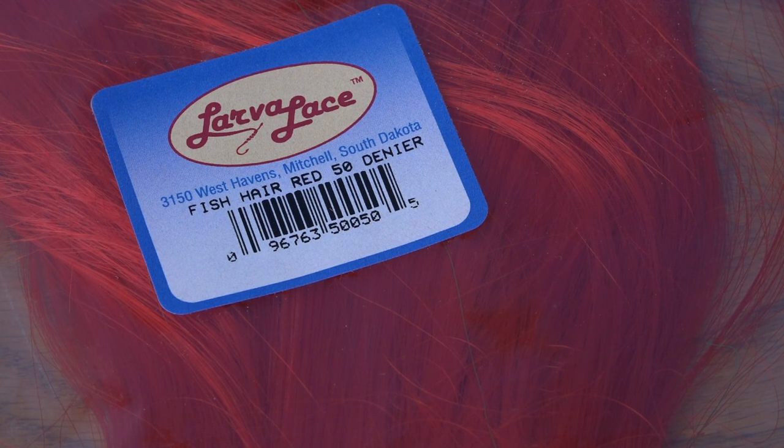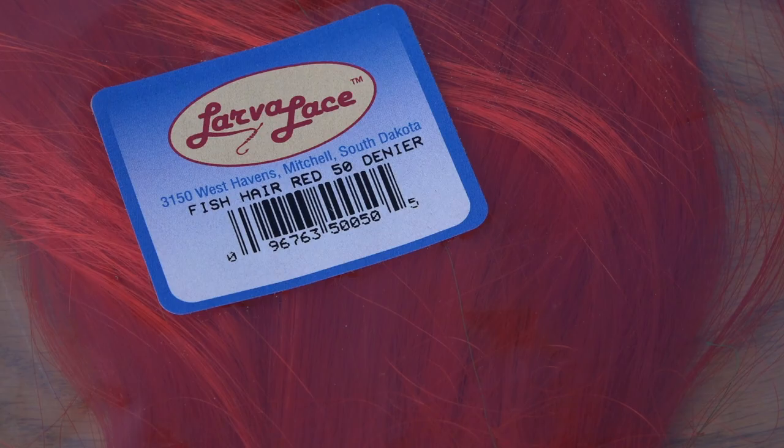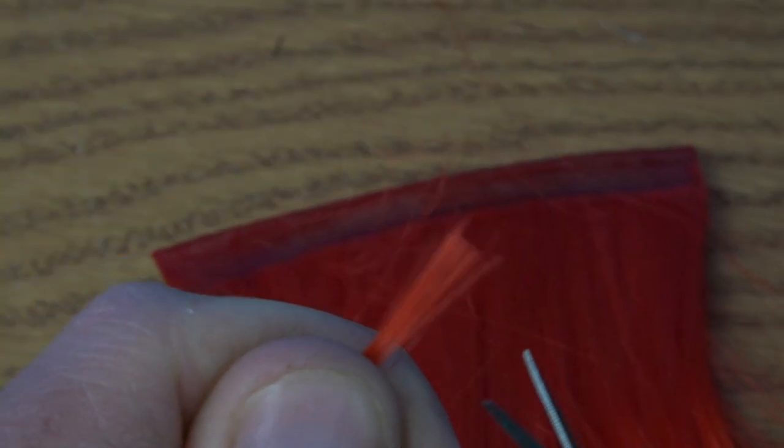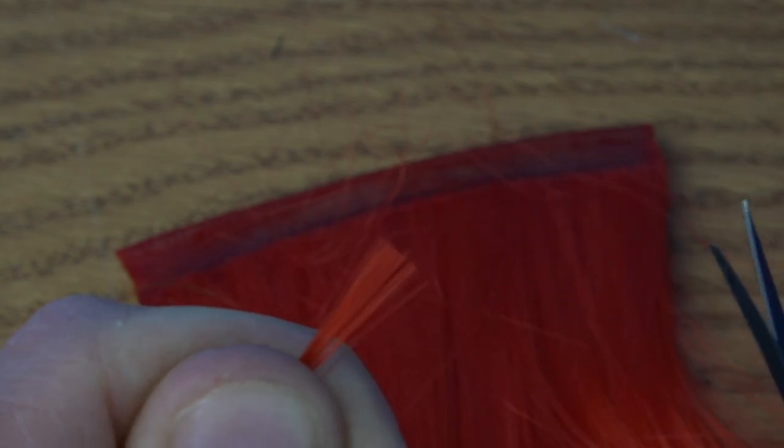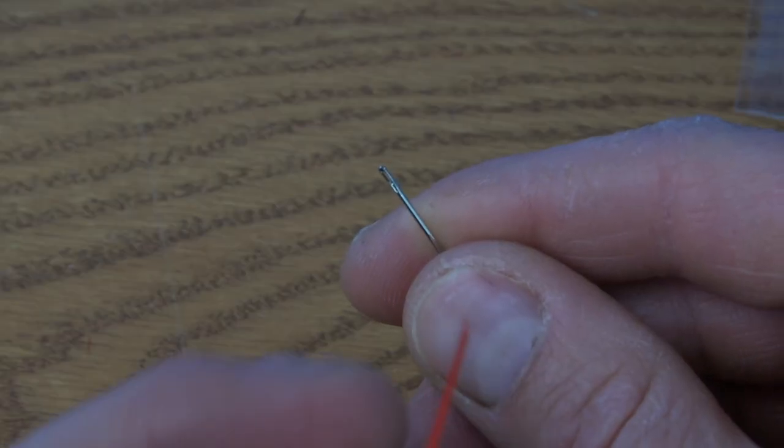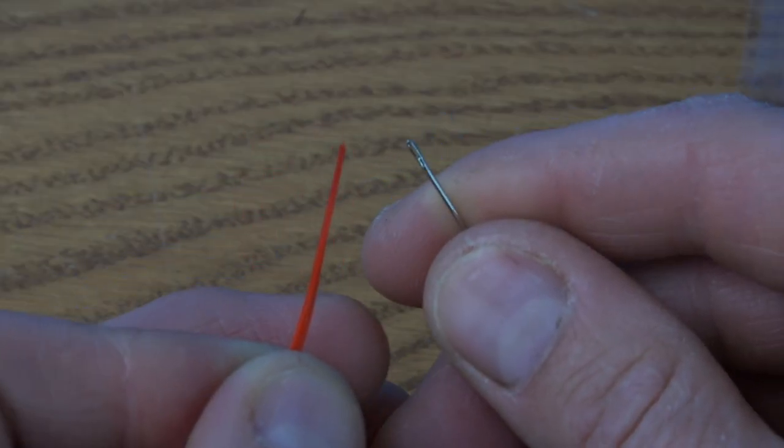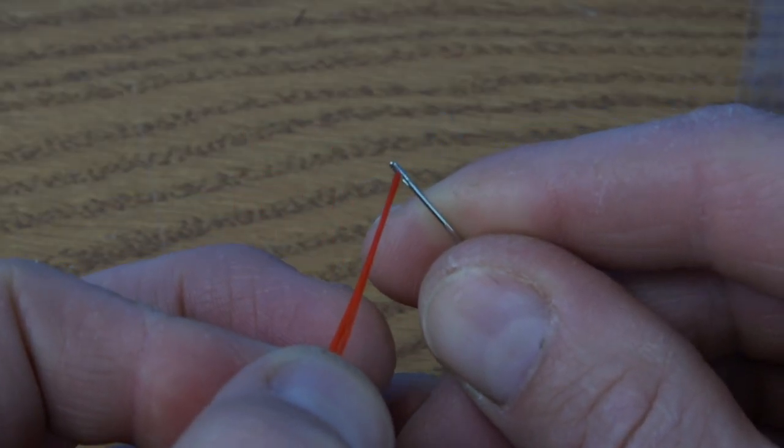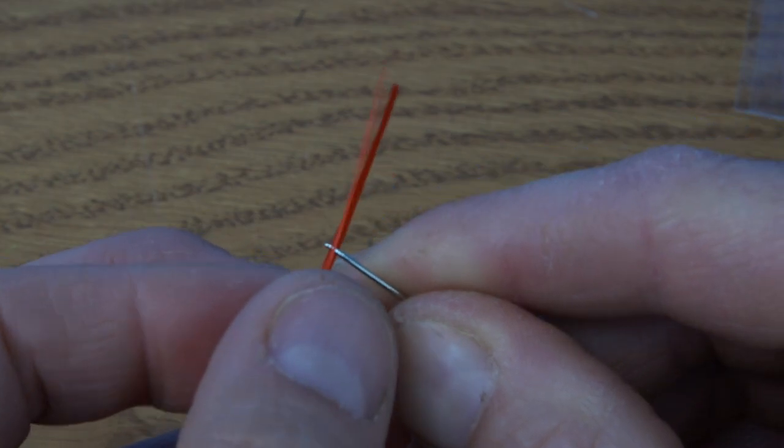Finally, I'm going to use a material called fish hair. It's a synthetic hair material that's primarily used for lure dressing. Trim a very small clump of hair from the hank and snip the ends so that they're nice and even. Wet the tips with saliva to bring them to a point, and then push as many of those fibers through the eye of a needle that you can.